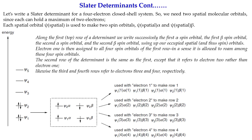We can make rows, one for each electron. For electron 1, the row is: psi_1(1)alpha(1), psi_1(1)beta(1), psi_2(1)alpha(1), psi_2(1)beta(1). For electron 2: psi_1(2)alpha(2), psi_1(2)beta(2), psi_2(2)alpha(2), psi_2(2)beta(2). For electron 3: psi_1(3)alpha(3), psi_1(3)beta(3), psi_2(3)alpha(3), psi_2(3)beta(3). For electron 4: psi_1(4)alpha(4), psi_1(4)beta(4), psi_2(4)alpha(4), psi_2(4)beta(4).